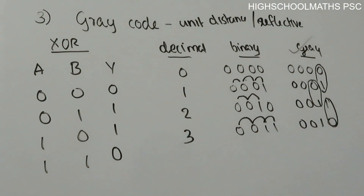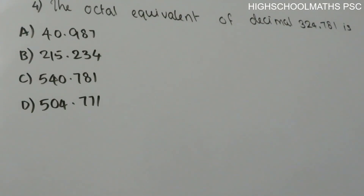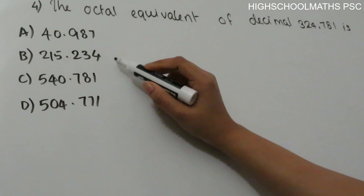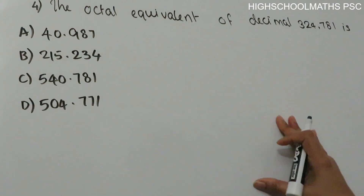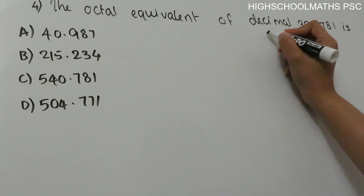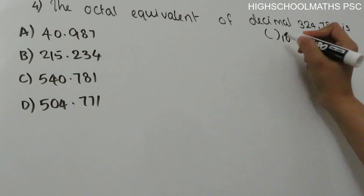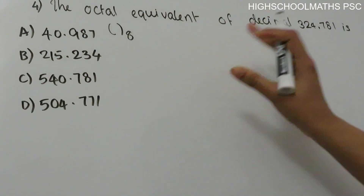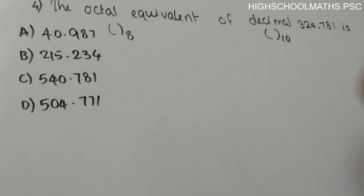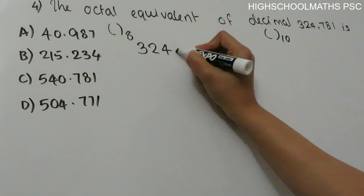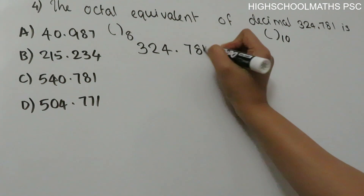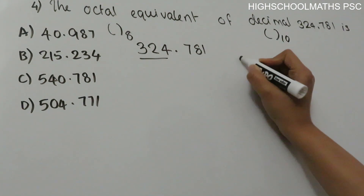Fourth question: the octal equivalent of decimal 324.781 is — Option A: 504.987, Option B: 215.234, Option C: 540.781, Option D: 504.771. We need to convert from decimal (base 10) to octal (base 8). The number is 324.781.